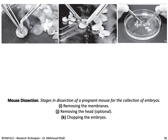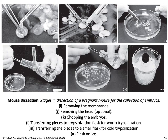After that, you remove the membranes surrounding the embryo. It is optional to remove the head, but you need to chop the embryo into small pieces. Then you transfer pieces of tissue to a trypsinization flask for warm trypsinization, and other pieces into a small flask for cold trypsinization — as shown in figure N, where the flask is kept on ice.